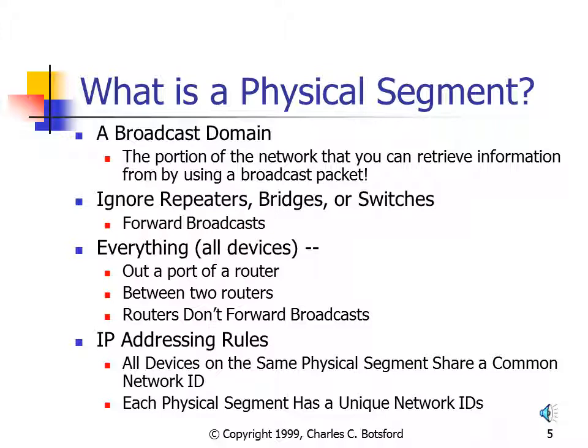So our definition of a physical segment is everything out one port of a router or between two routers, because a router does not forward a broadcast. This is important because of our IP addressing rules — all devices on the same physical segment share a common network ID. All devices out one port of a router or between two routers are on the same physical segment and therefore have the very same network ID, with a unique host ID to give them a unique IP address. Each physical segment has a unique network ID, so a router with three different ports gives us three physical segments, each with a unique network ID.